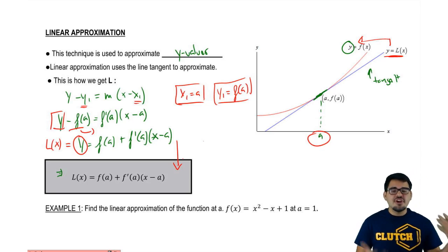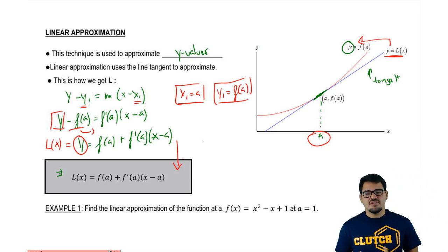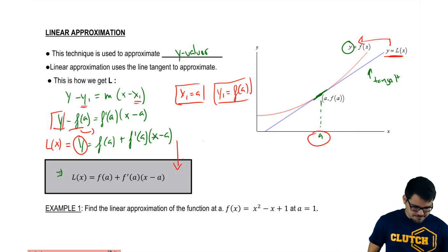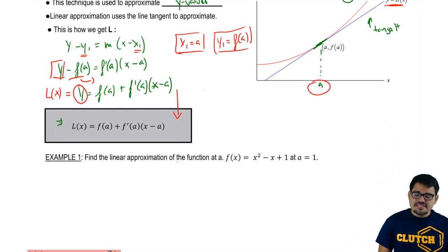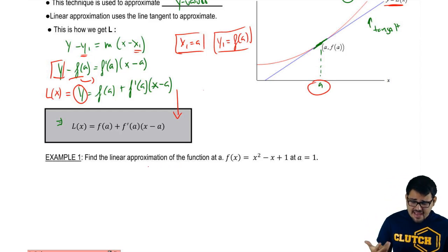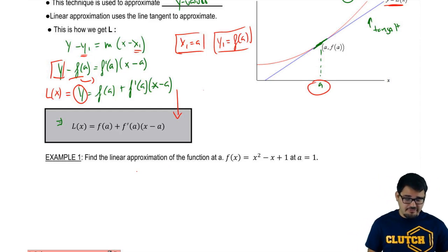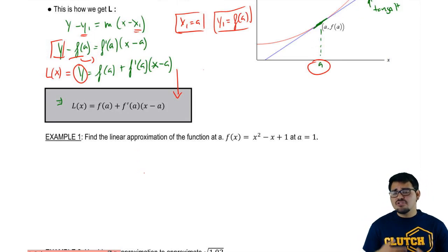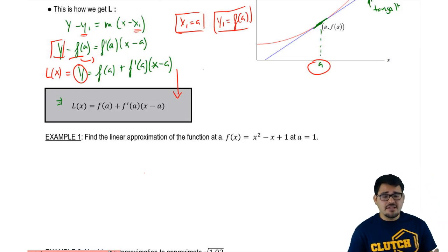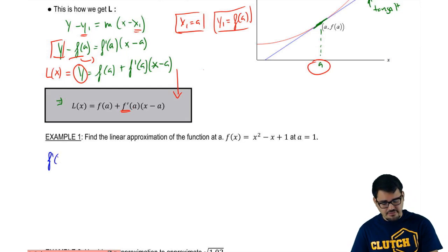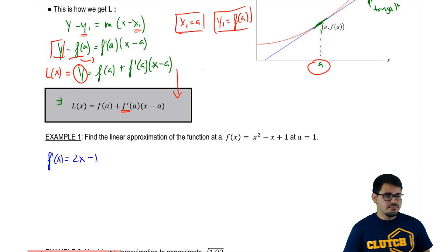Linear approximation is nothing but a tangent line with little twists of derivatives and calculus. Let's do an example to put this concept together. In example one, find the linear approximation of f of x equals x squared minus x plus 1 at a equals 1. The first thing to do is find f prime — take the derivative of f of x — which gives us 2x minus 1.